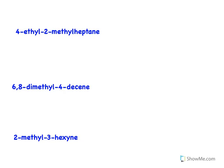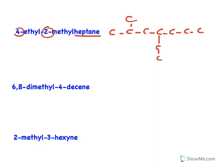Now it's the opposite direction — a name is given and we draw the compound. We start reading from the last part of the name: it's a heptane, so it's an open chain of seven carbons. We draw seven carbons numbered one through seven. We have an ethyl group on the fourth carbon — ethyl is two carbons — and a methyl group on the second carbon.